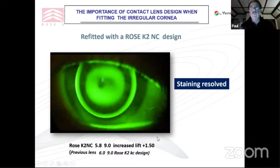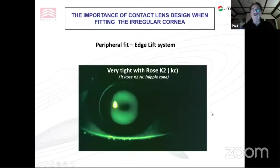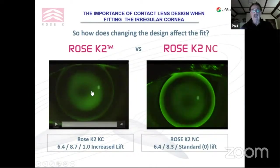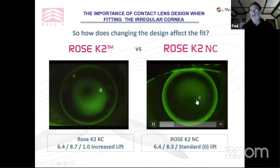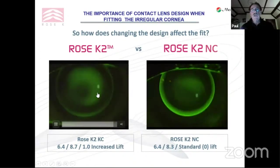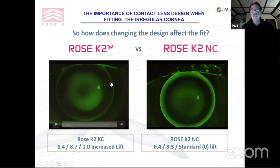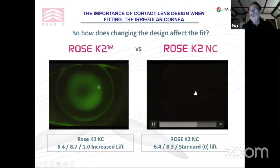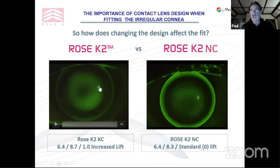This is why it's very important to identify the shape of cornea you're fitting. Here we can compare two designs on exactly the same eye — the keratoconic design versus the nipple cone design on the same cornea. Pooling is greater with the keratoconic design; edge lift is much better with the nipple cone design; movement of the nipple cone design is better. So you'll get good tear exchange with the nipple cone design, not with the keratoconic design. The nipple cone design is going to work better.